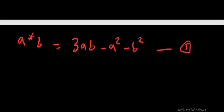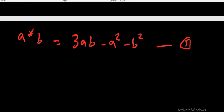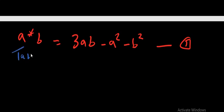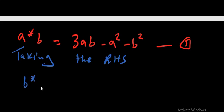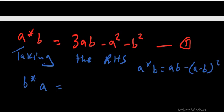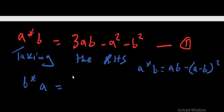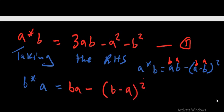Now taking the right-hand side, which is b★a. In the expression a★b = ab - (a - b)², wherever there is a we put b, and wherever there is b we put a. So b★a = ba - (b - a)². Expanding: b★a = ba - [(b - a)(b - a)] = ba - [b² - 2ba + a²].